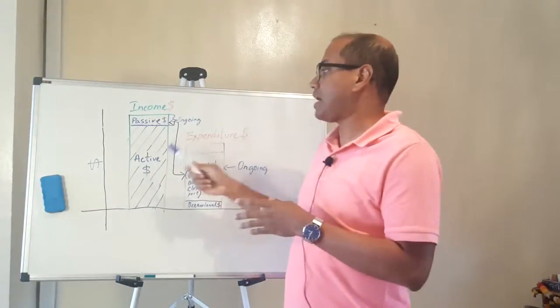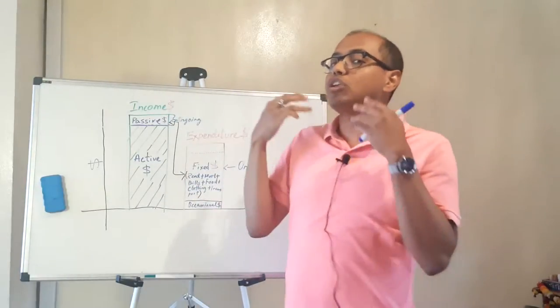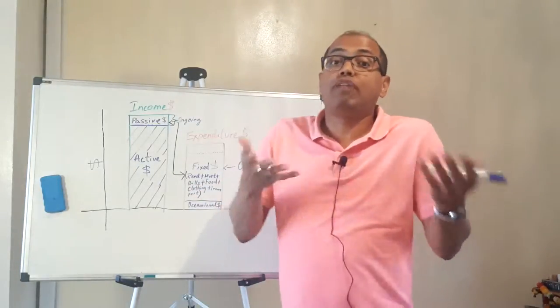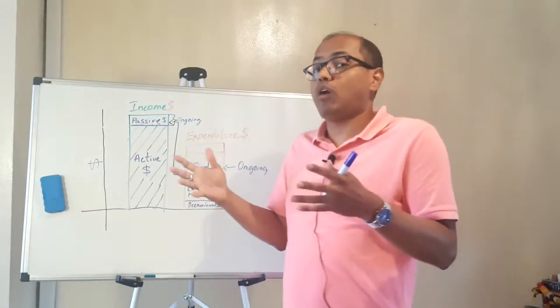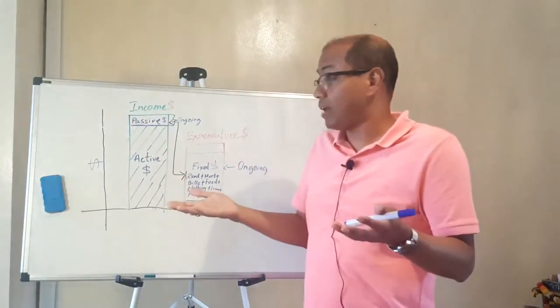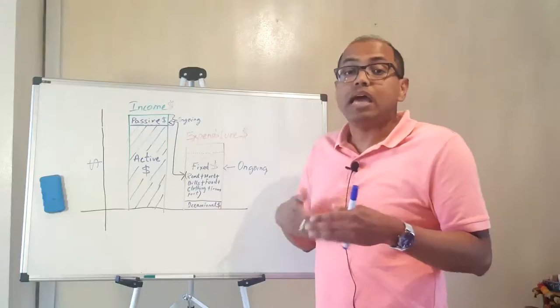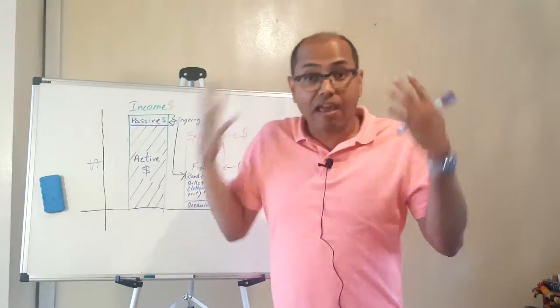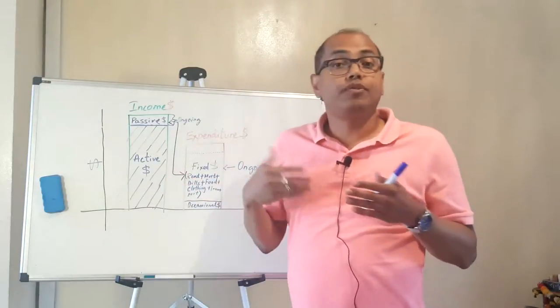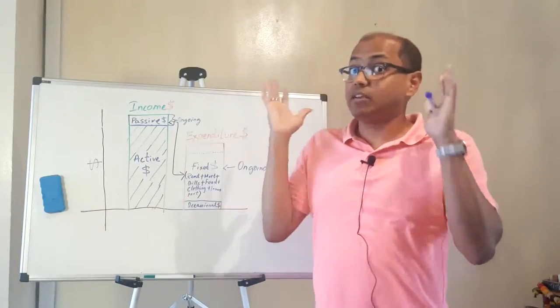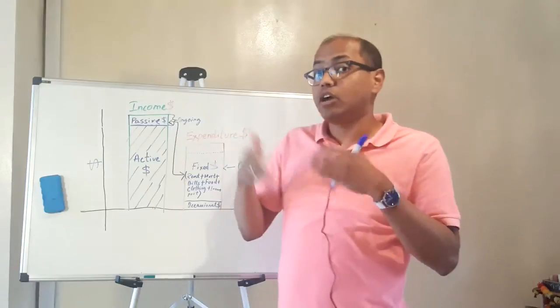Passive income does not require your action or activity and you're still getting paid. For example, rent - if you have houses you've rented and the rent comes in every month, you don't have to put any effort for it. Or if you're gaining dividends, or if you've written books and sell something online, you get royalty income.